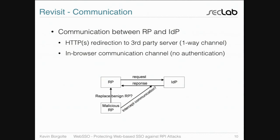Alternatively, some protocols use an in-browser communication channel — for instance, using postMessage in HTML5 or Flash objects. Some have compatibility issues with browsers, which is why Facebook opted for Flash. This resulted in Facebook's SSO being vulnerable because a malicious relying party was able to spoof a request, and although the request was going to the benign relying party, the malicious RP was able to sniff the Flash traffic and impersonate users.